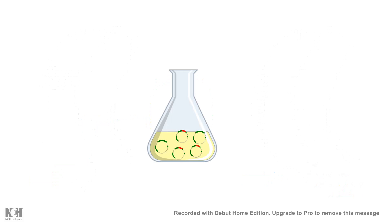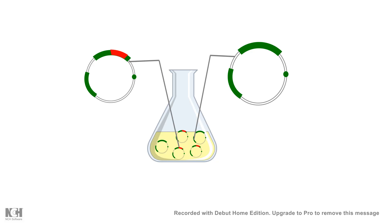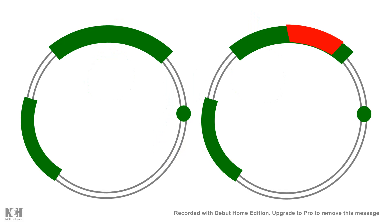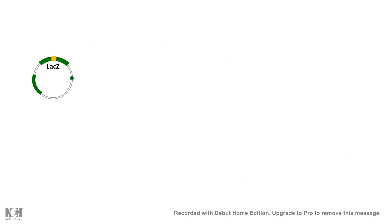This allows us to get rid of bacteria that have not been transformed with the plasmid. However, there is a second problem: from the ligation products, some plasmids may be self-ligated without the insert, while others carry the insert. We want only the plasmids containing our gene of interest. To distinguish these, we can use screenable markers. Most plasmids carry the lacZ gene, which codes for beta-galactosidase. Beta-galactosidase is involved in cleaving lactose to glucose.